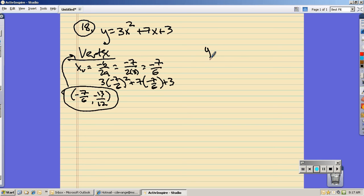Y-intercept is easy. It's when x equals 0. That turns to 0. That turns to 0. So, y equals 3. It's just the c part of the equation.